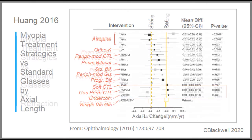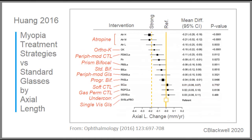Complementary to refraction data, there is also the forest plot for axial length. Again, the control is the solid line and the strong effect is the dashed line. For the statistically significant group, atropine is still leading the way. A notable addition is orthokeratology.